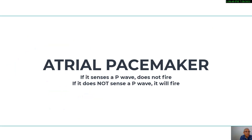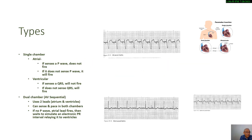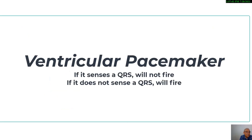In an atrial pacemaker, if it senses a P-wave, it does not fire. However, if it does not sense a P-wave, it will discharge an electrical energy. Similarly, a single chamber pacemaker located in the ventricle will not fire if a QRS complex is sensed, but if it does not sense a QRS, then it will fire.